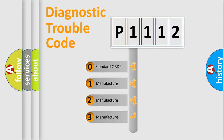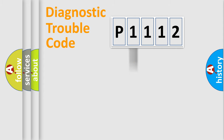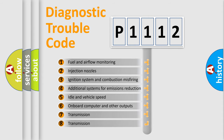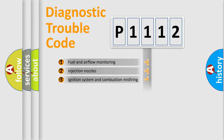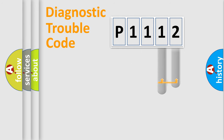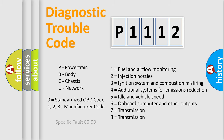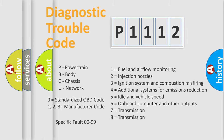If the second character is expressed as zero, it is a standardized error. In the case of numbers 1, 2, or 3, it is a more specific expression of a car-specific error. The third character specifies a subset of errors. This distribution is valid only for the standardized DTC code, where only the last two characters define the specific fault of the group. This division is valid only if the second character is expressed by the number zero.